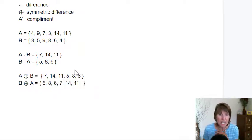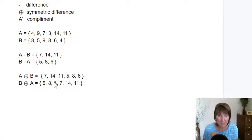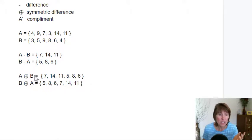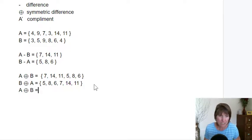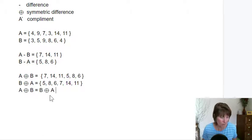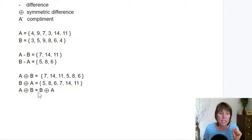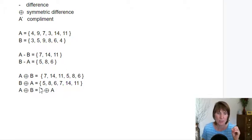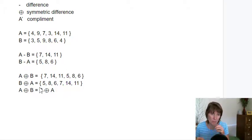Now if we look at these, they're in a different order because I started with them in a different order, but notice that the result has exactly the same elements — six elements in both, and they're the same. So this is equal to this. That's what it means by being symmetric — it doesn't matter which order you do them in because they're equivalent even when you turn them around. So A symmetric difference B is equal to B symmetric difference A, very much like XOR. It can be in A or B, but not in both.